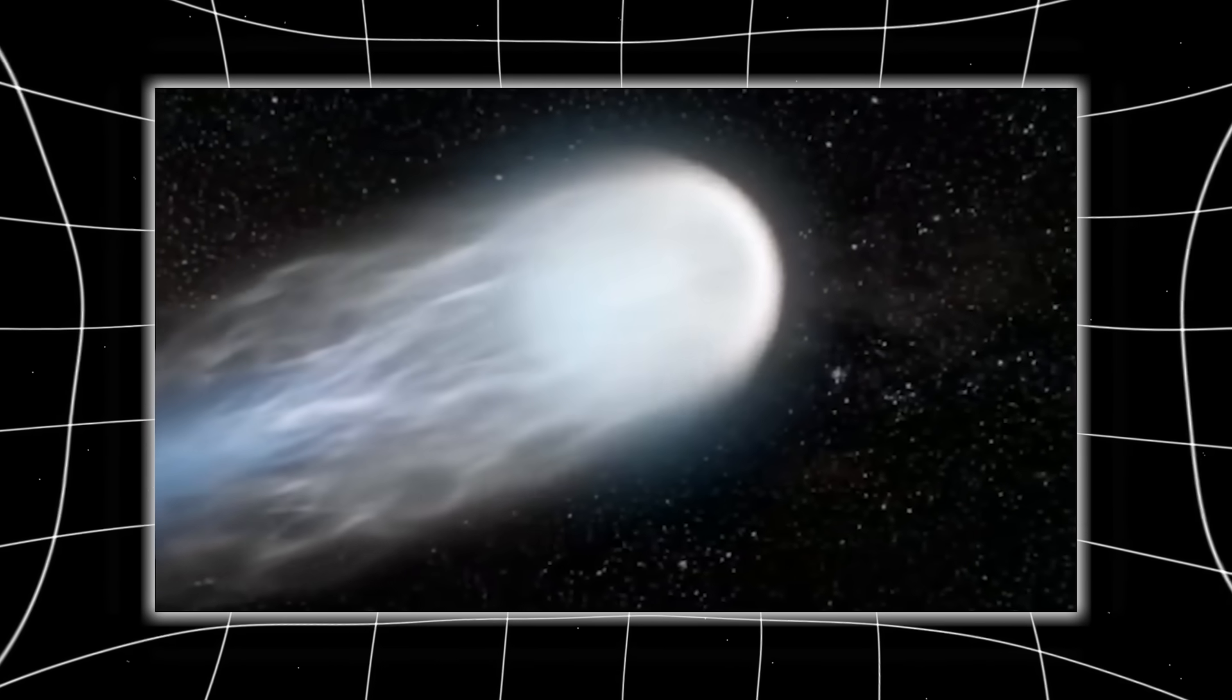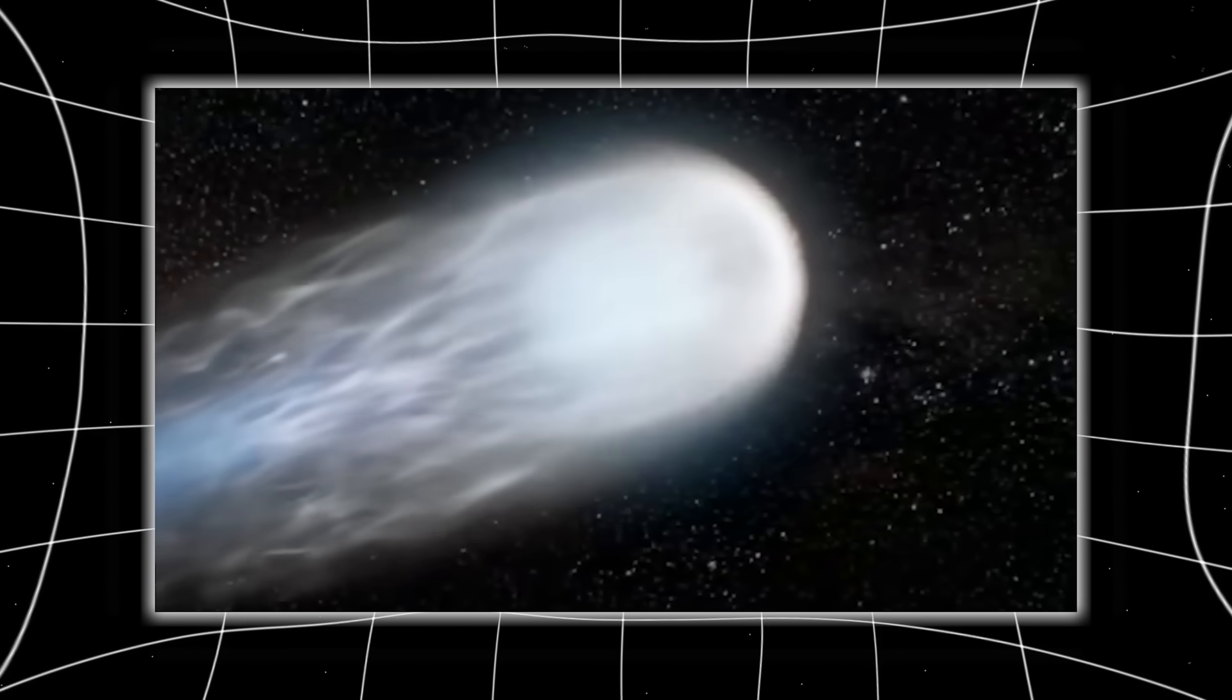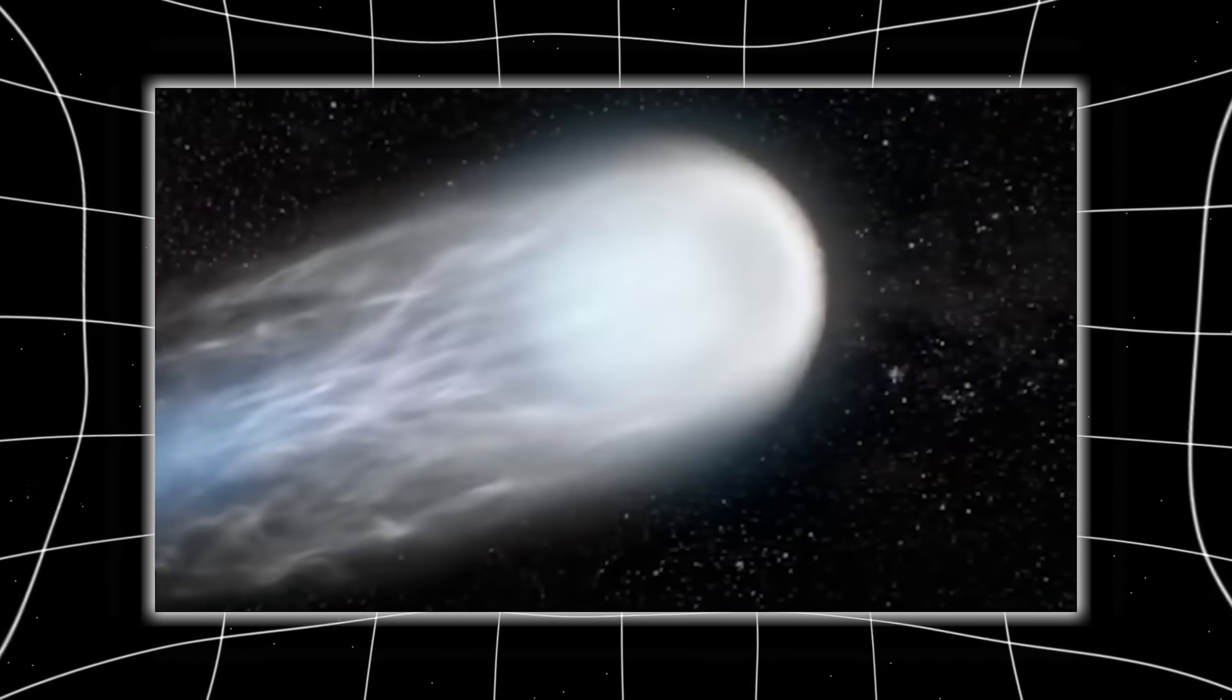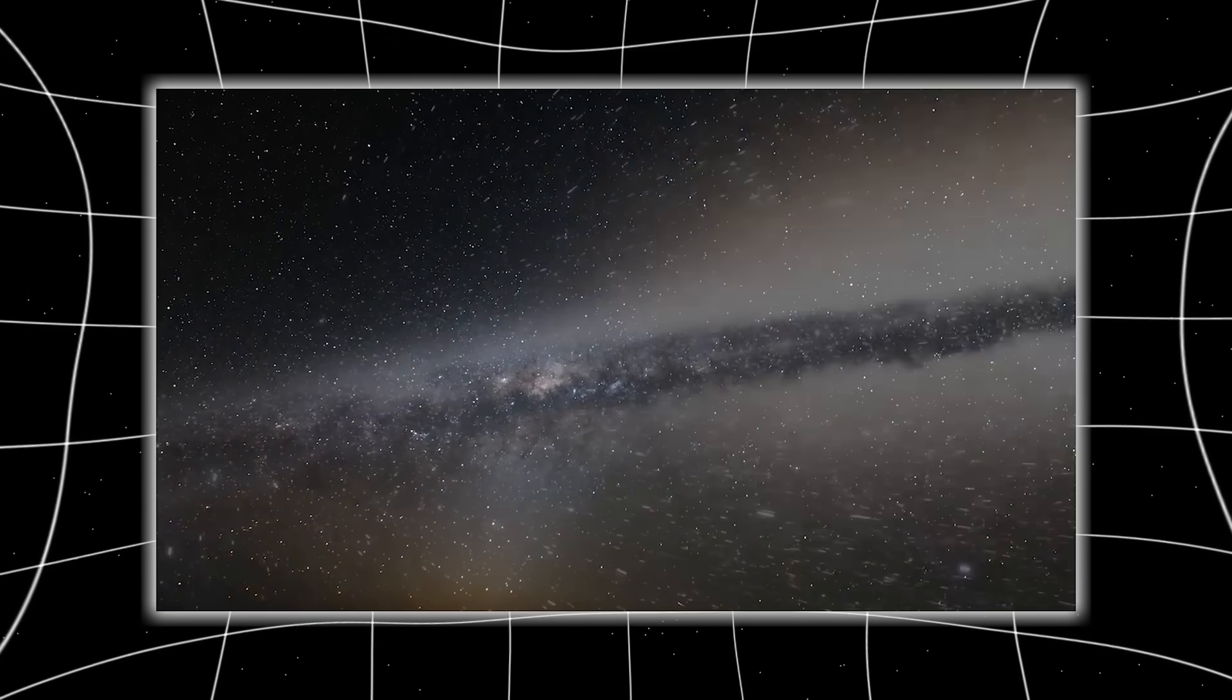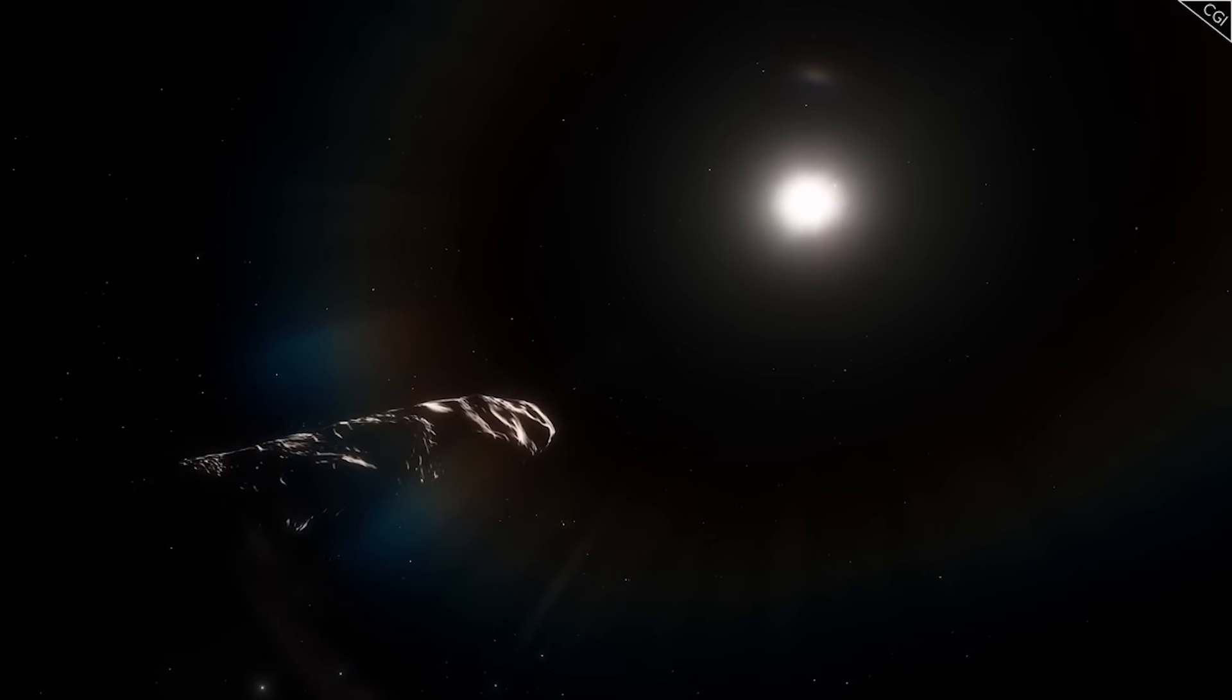When Ray removes background stars from his captures, he reveals something unexpected. The central region of the coma appears pointed, not round. This structure has shape, directionality, and perhaps rotation. Ray isn't claiming the nucleus is resolved. No telescope on Earth or in orbit can do that with current technology. But the pointed structure is undeniably present.